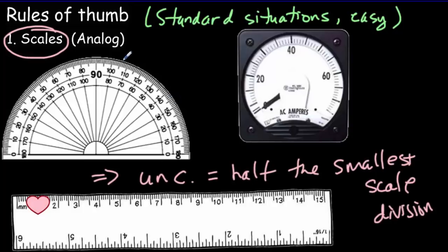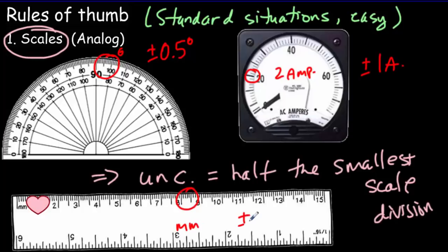So this protractor is marked in degrees. So our uncertainty would be plus or minus 0.5 degrees, half a degree. Every dash on this ammeter here is worth 2 amperes. Our uncertainty would be half that much. It would be plus or minus 1 ampere. This ruler here is marked in millimeters. So our uncertainty would be 0.5 millimeters.